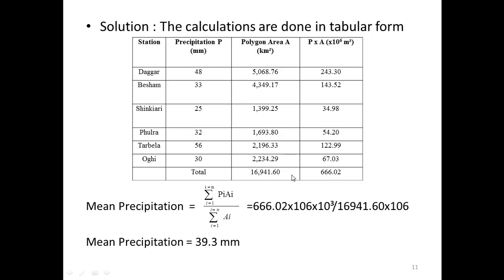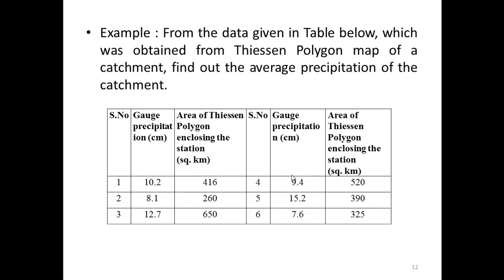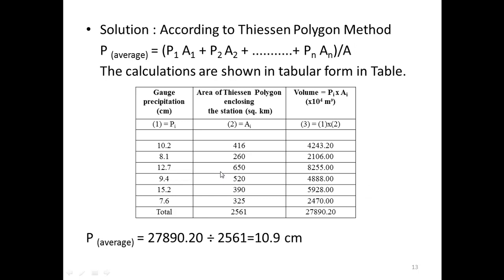Next example: From the data given in a table obtained from a Thiessen polygon map of a catchment, find the average precipitation. Six stations are given with their gauge precipitation values and respective polygon areas in square kilometers. We calculate P·A for all stations, sum the P·A values, sum the total polygon area, then divide the total volume by the total area to get P_avg = 10.9 centimeters.